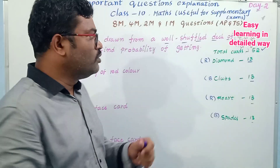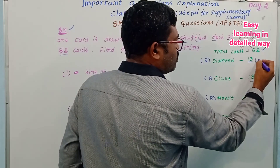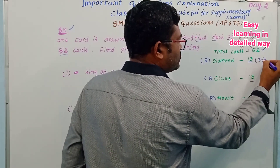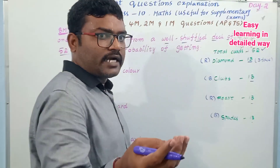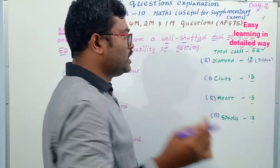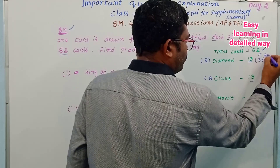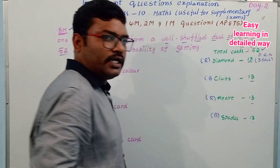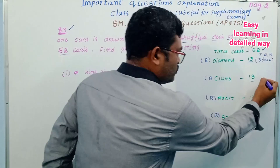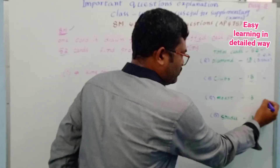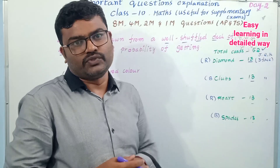Out of 13 cards in each suit, we have 3 face cards: Jack, Queen, and King. In each suit there are 3 face cards, so total 12 face cards across all 4 suits.